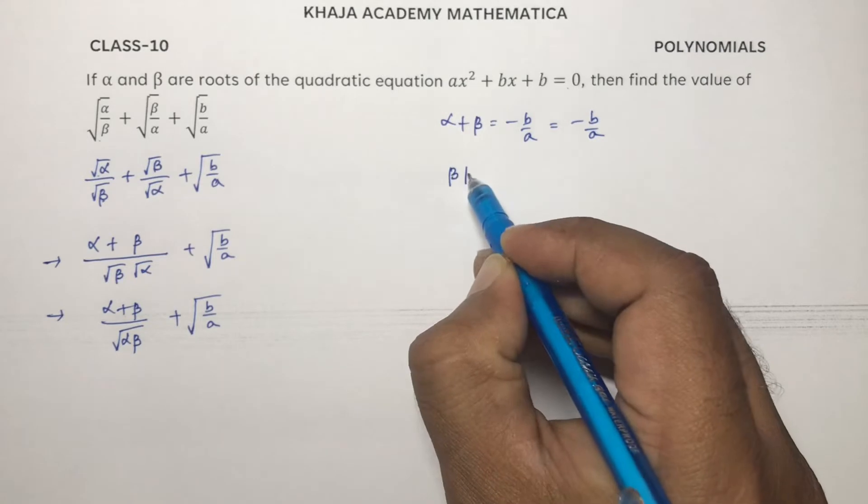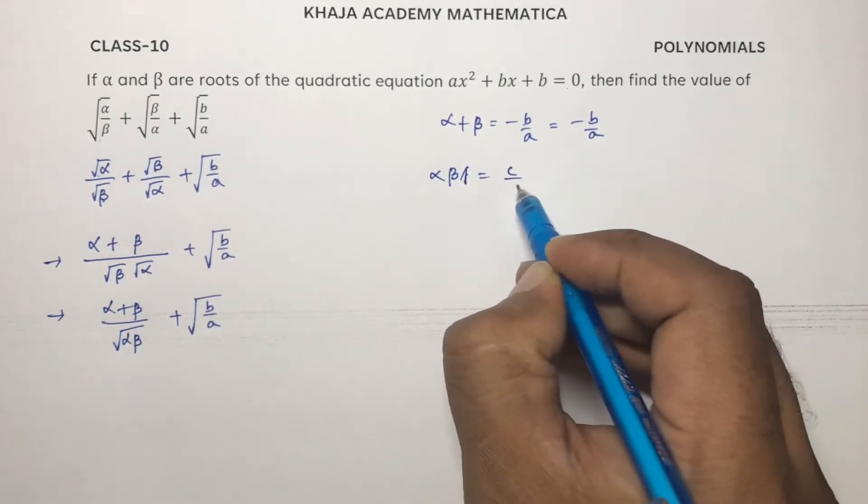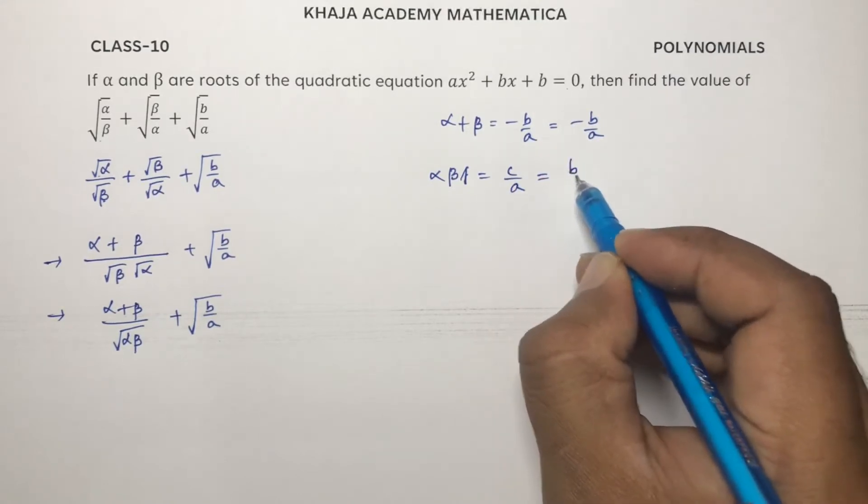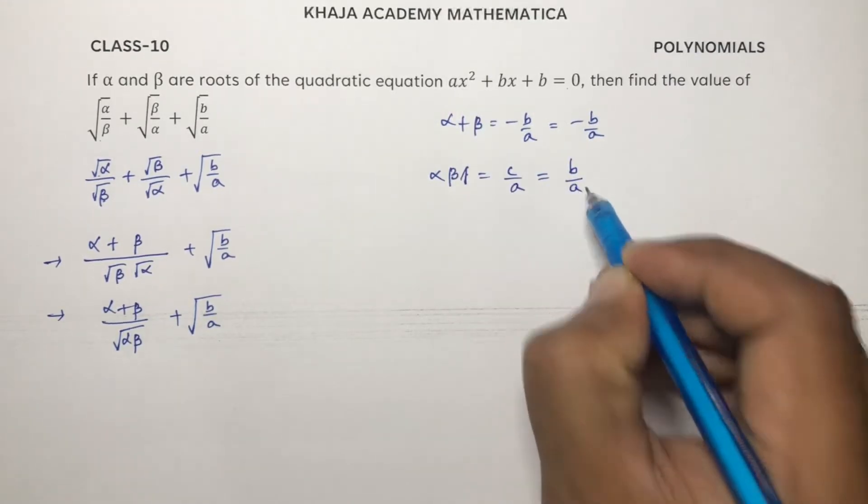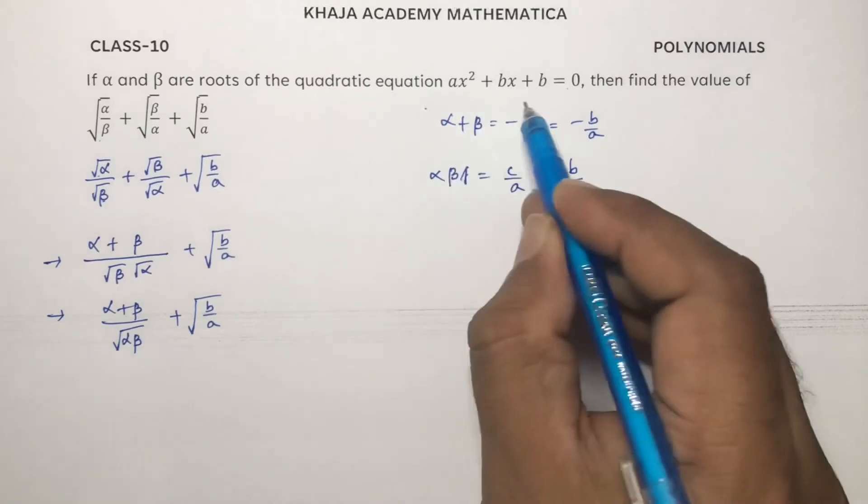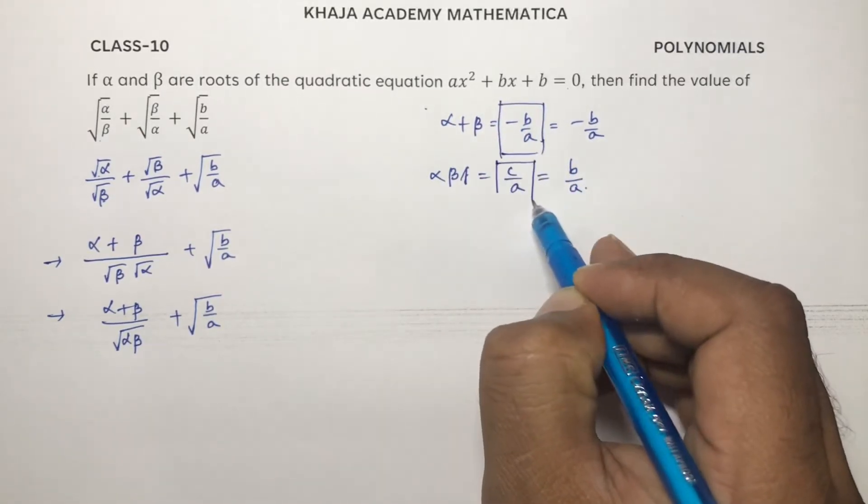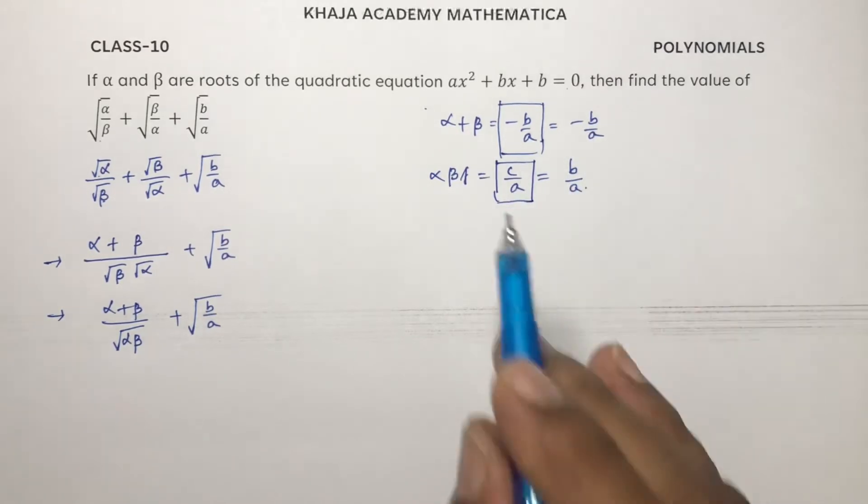Alpha into beta is c by a. Here in place of c we have b, in place of a we have a. This is the formula. This we got the value for this question.